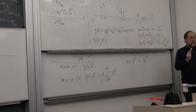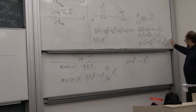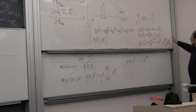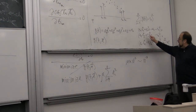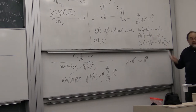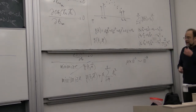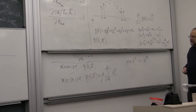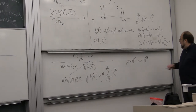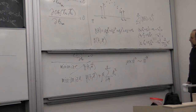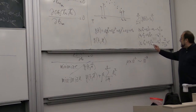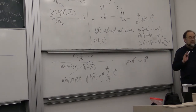The idea is: if you minimize this combined objective, this extra term prevents the a's from growing too fast. As the a's grow, this penalty also grows, and it prevents the model from picking up noise in the data.